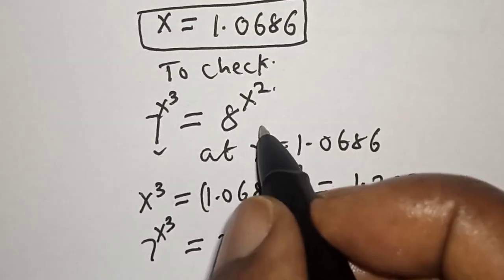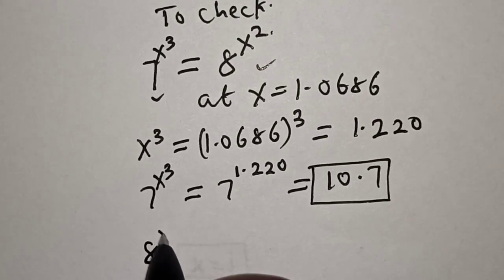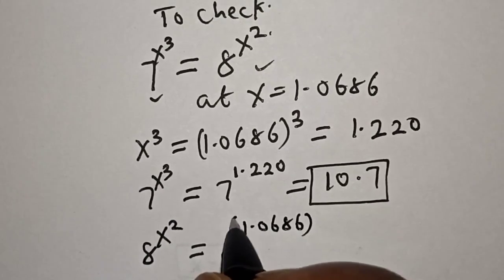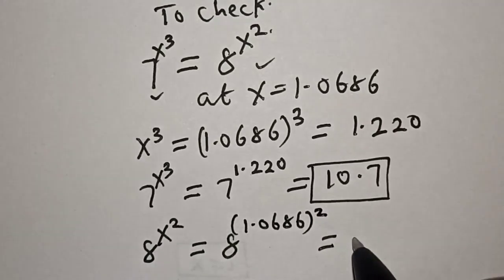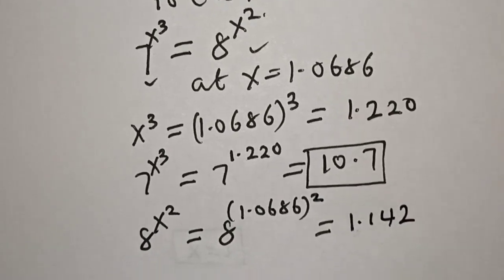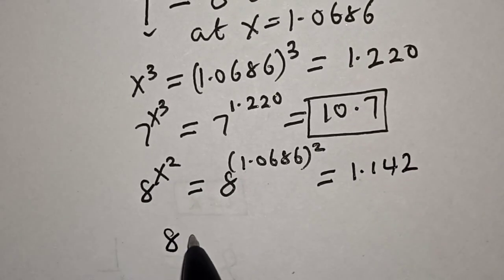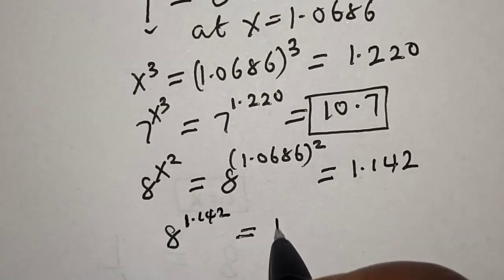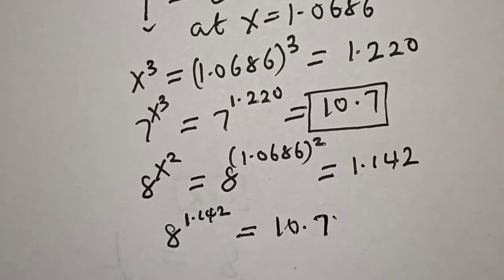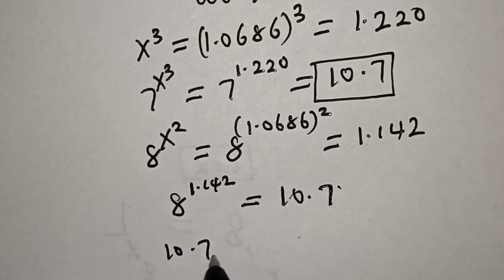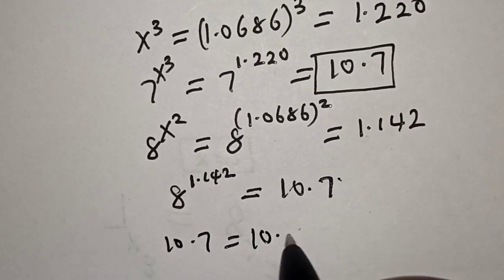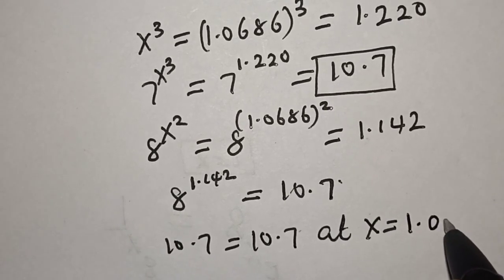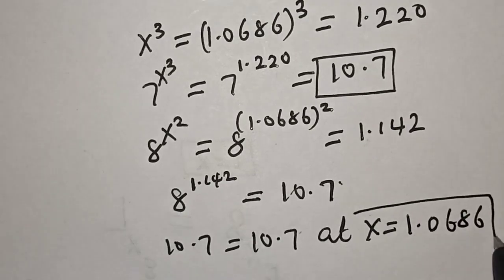Now for the right hand side, 8 raised to power s squared is equal to 8 raised to power 1.0686 squared, which equals 1.142. Now 8 raised to power 1.142 is equal to 10.7. This means the left hand side, 10.7, is equal to the right hand side, 10.7, at s equal to 1.0686, which satisfies the given equation.